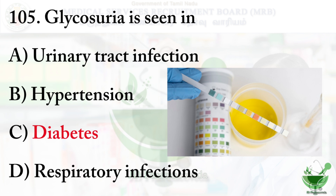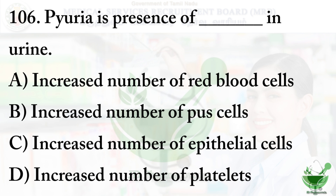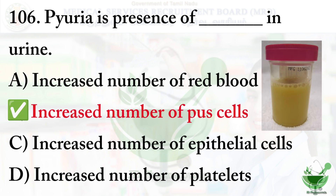Question number 106: Pyuria is presence of dash in urine. Options: option A – Increased number of red blood cells, option B – Increased number of pus cells, option C – Increased number of epithelial cells, option D – Increased number of platelets. The right option is option B – Increased number of pus cells, which indicates a bacterial or viral infection.